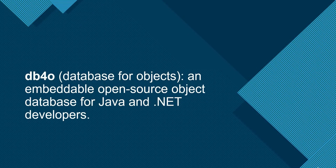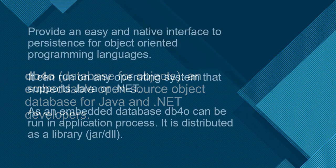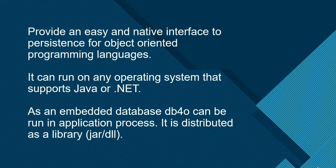db4o is an embeddable open source object database for Java and .NET developers. It provides an easy and native interface to persistence for object-oriented programming languages. It can run on any operating system that supports Java or .NET, making it platform independent.